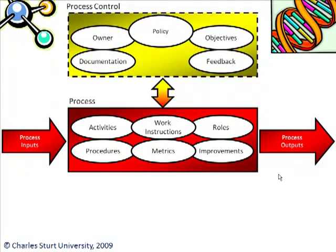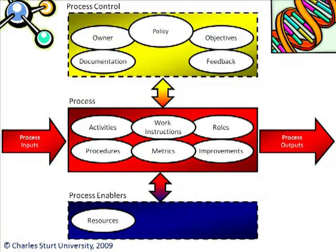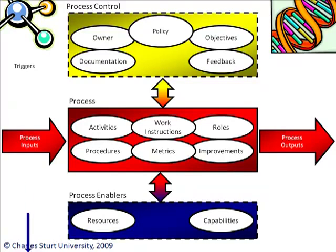We've got the process control layer in place and the actual process in place. What else do we need? We need some process enablers — being the resources, like the technology, the applications, and probably budget as well. And we need some capabilities: management skills, leadership, and people with the right abilities to do things. Something will also trigger the process. If a user calls the service desk with an incident, that triggers the incident management process. If someone submits a request for change, that triggers the change management process. So each process typically has one or more triggers.